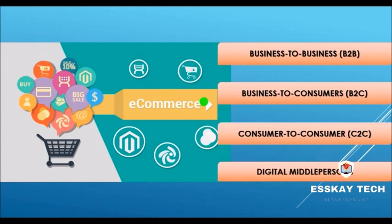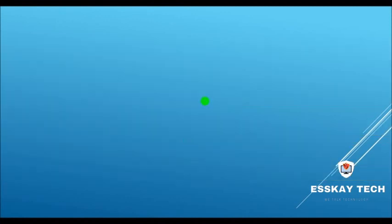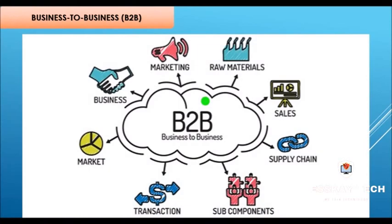The fourth mode is the digital middleman. Business to Business (B2B) is a type of e-commerce that refers to a company that does business with another company — that means a company buying and selling a product to another company.